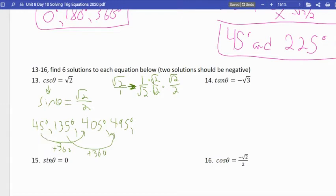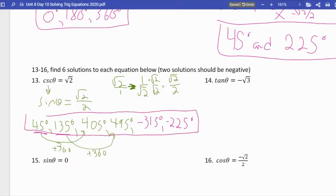And I'll switch colors for these last two. It says make sure two answers are negative. So I'm going to go back to my original angles, 45 and 135, and I'm going to subtract 360 from both of them. So 45 minus 360 is negative 315. And 135 minus 360 is negative 225. So those are my answers, or at least the most obvious of them. Fantastic.